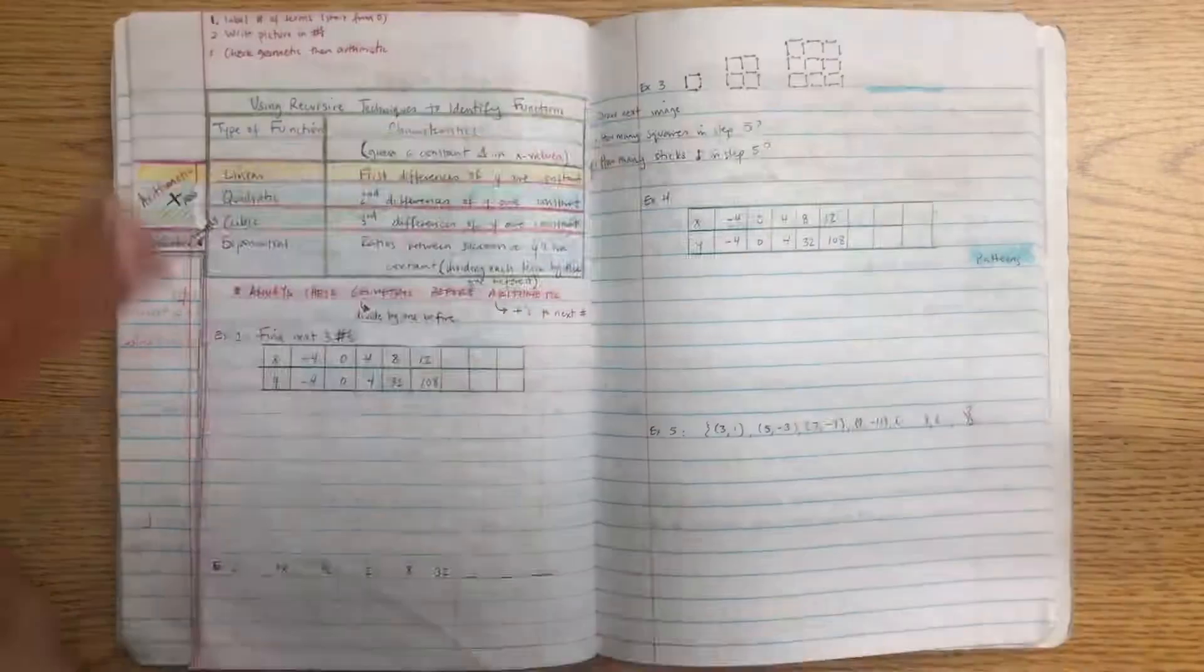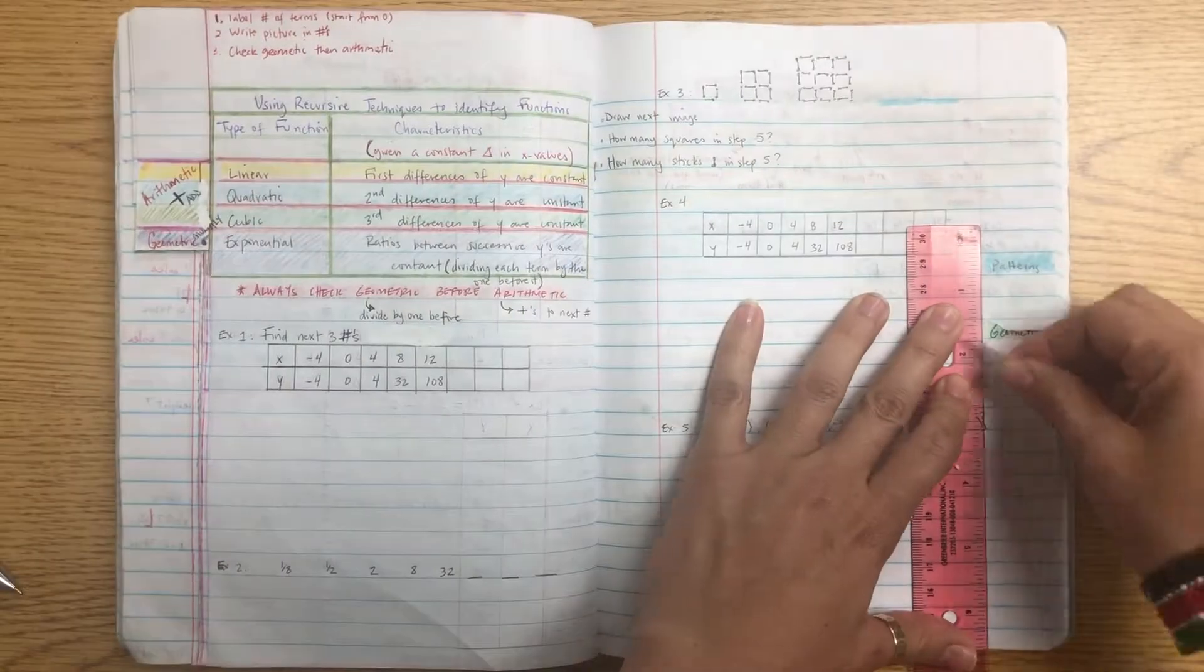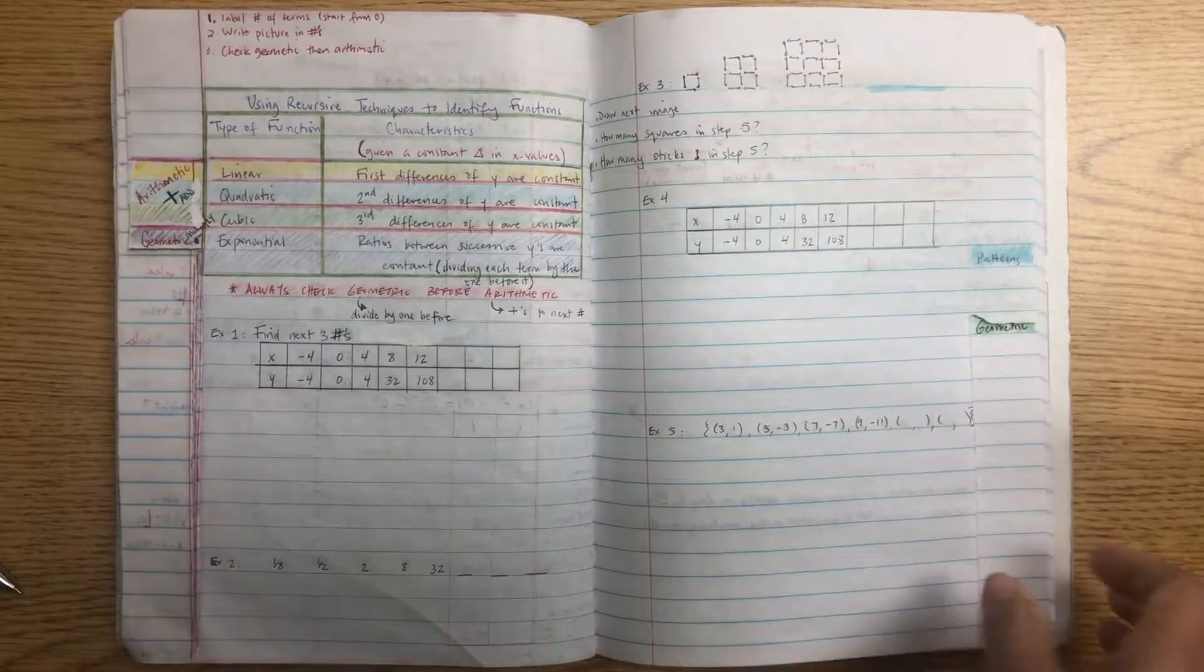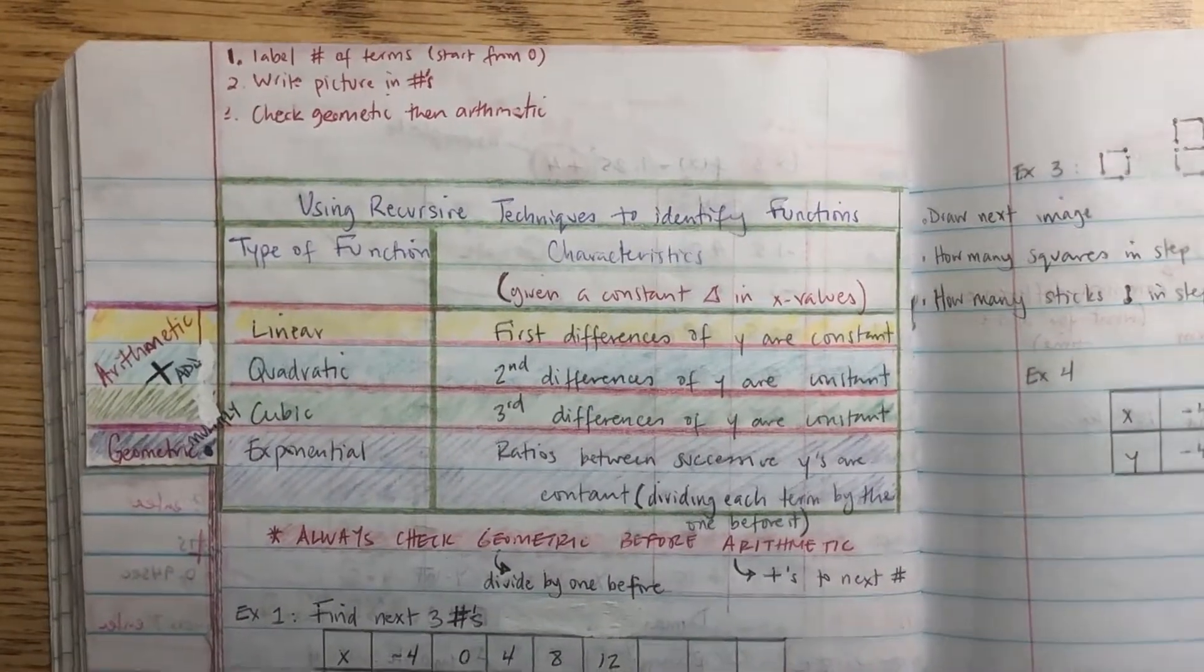Alright, so we're going to take a look at patterns. As usual, go ahead and make a tab in your notebook and cut it down to the margin and all the way down. Then pause the video and copy this down.